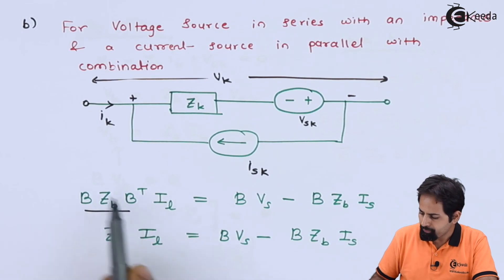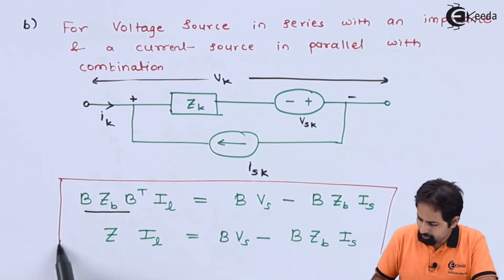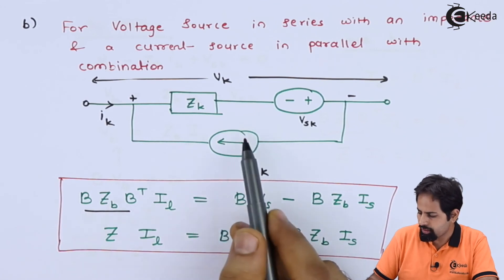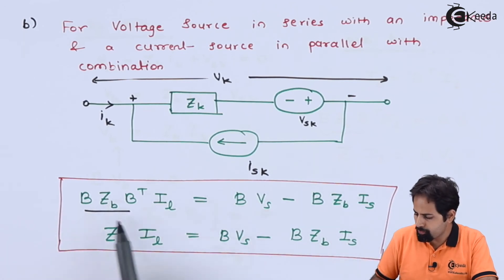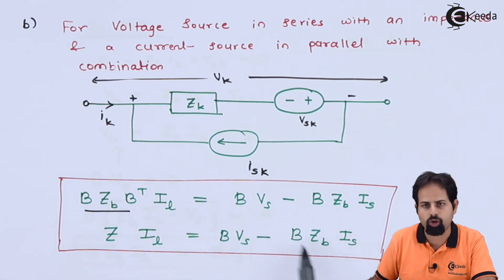we can prove that the last step is this. This is the extra or additional term. So in a numericals, if this current source is not present, we will not use this term because I will be 0. So we have to just remember this formula. This is same: B ZB B^T is called as Z into IL = B into VS. You can see this is just the extra term. So that is all about KVL.